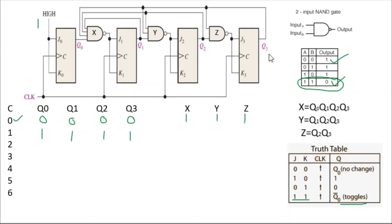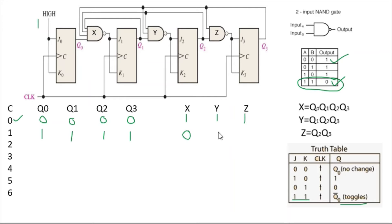When the first clock is applied, since X, Y, and Z are all one, all flip-flops toggle. The outputs become q0=1, q1=1, q2=1, q3=1. Now before the second clock, since all outputs q0, q1, q2, q3 are one, gate X outputs zero, Y outputs zero, and Z outputs zero.